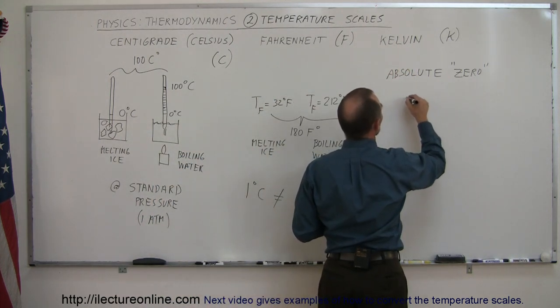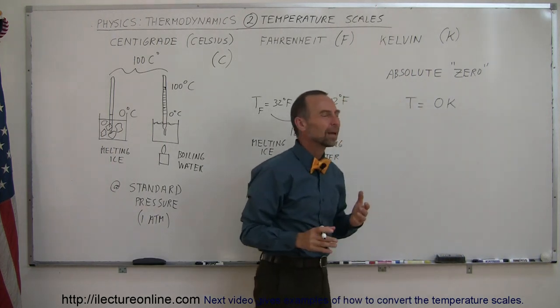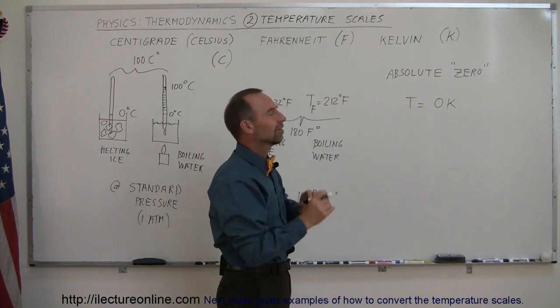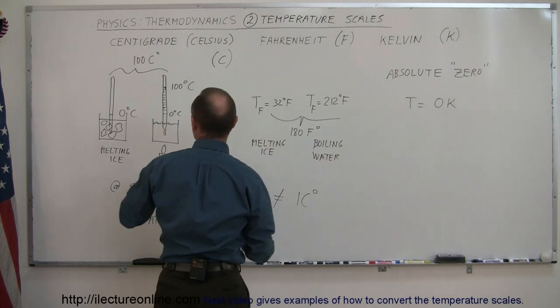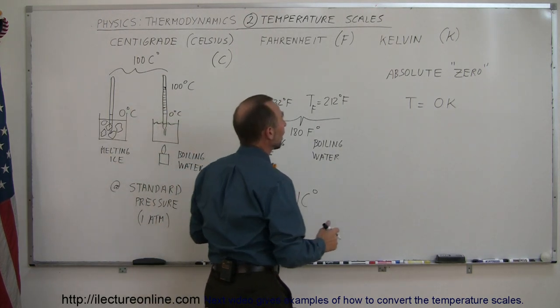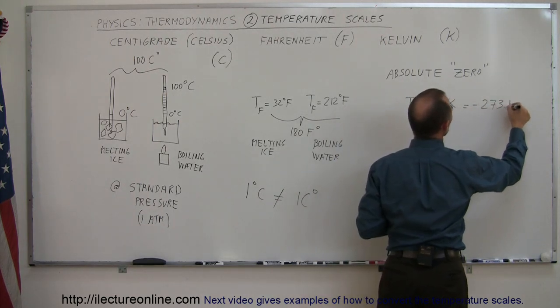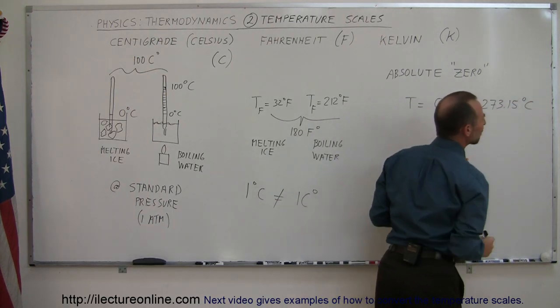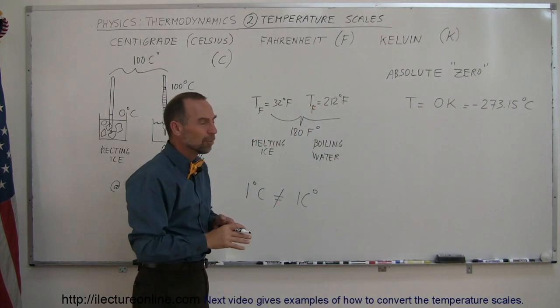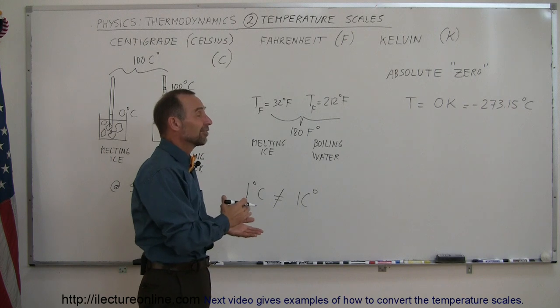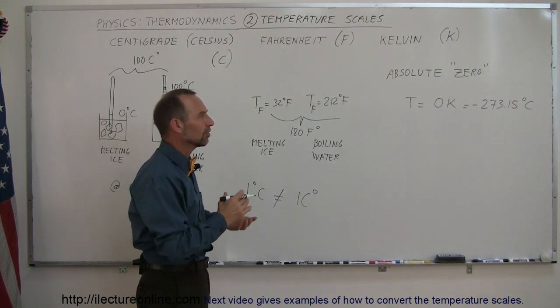And so, for absolute zero, the temperature then is equal to zero Kelvin. We don't put the degree symbol on Kelvin, by the way, so just simply zero Kelvin. And if we equate that to centigrade degrees, that is equal to minus 273.15 degrees centigrade. Now, the 0.15 is not really necessary, just to be a little bit more exact. Most of the time, we simply say zero Kelvin is equal to minus 273 centigrade degrees or degrees centigrade.